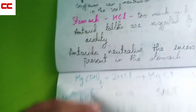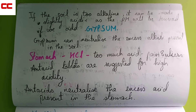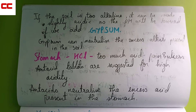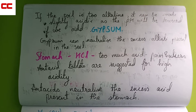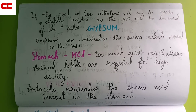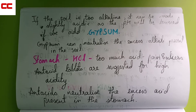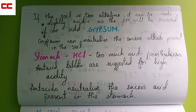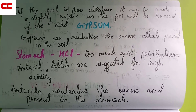If the soil is too alkaline — meaning too much basic nature, with pH values like 11, 12, 13, or 14 — we can slightly reduce the pH level by adding gypsum. Gypsum can neutralize the excess alkali present in the soil because gypsum has some acidic character. To neutralize basic character you need acid, and to neutralize acidic character you need a base — vice versa.